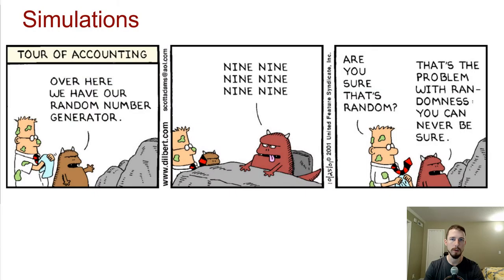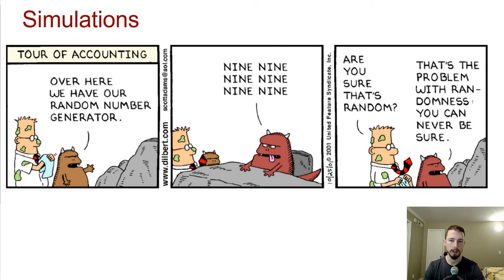Today we're going to continue our study of random and getting into simulations. Starting out with a comic strip — the tour of accounting from Dilbert. Over here we have a random number generator: 999999. 'Are you sure that's random?' 'That's the problem with randomness, you can never be sure.'